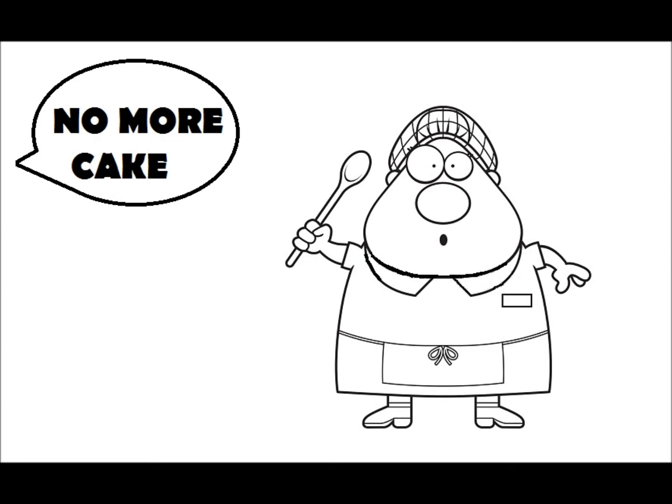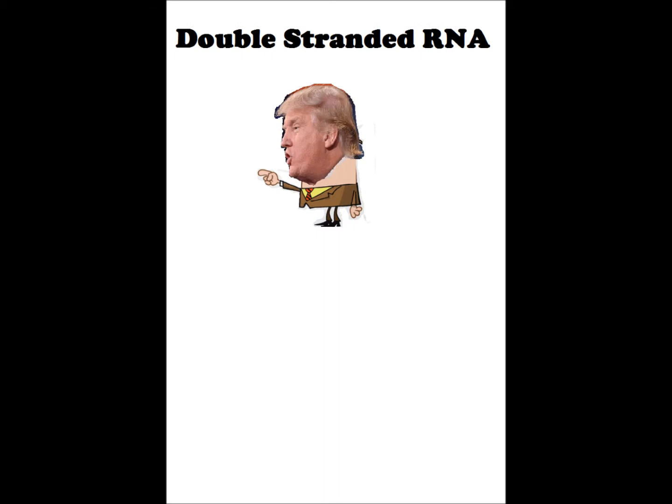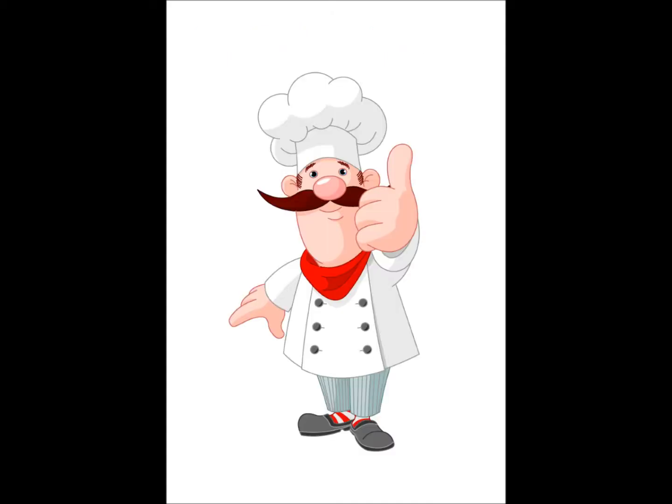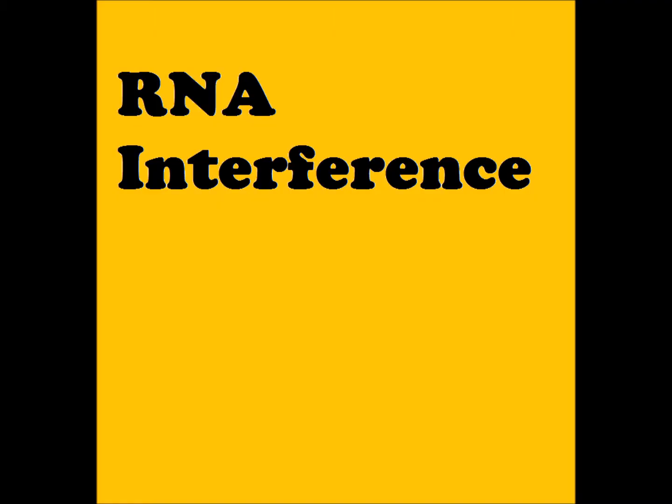This is why there needs to be a way to get the cook to stop making cake. To do this, cells fire the cook. Cells do this by making something called double-stranded RNA, which goes and fires the cook. And if a cell wants cake again, they will hire a new chef who will make them more cake. In a cell, this process is called RNA interference.